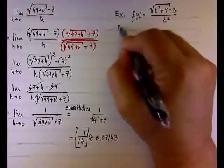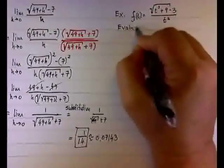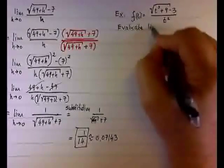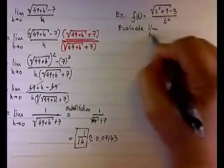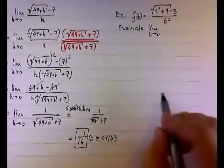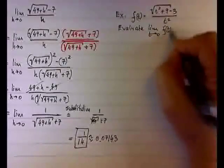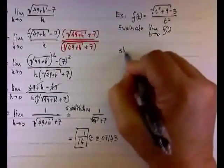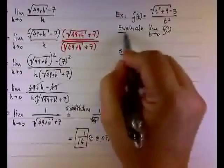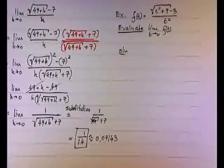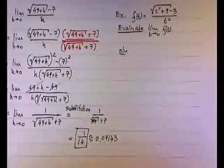We want to evaluate the limit as t goes to 0 of f of t. This is pretty much the same solution, but you notice that the key word is evaluate. Evaluate is find the exact value. When we want to solve it numerically or graphically, I'll probably write estimate instead of evaluate.